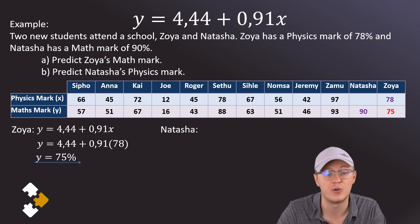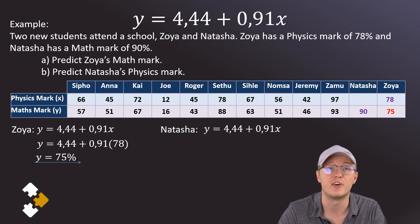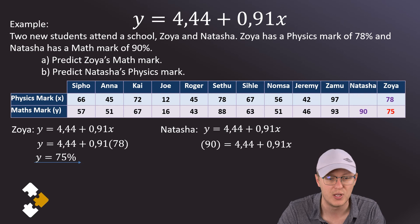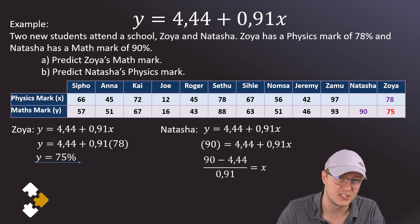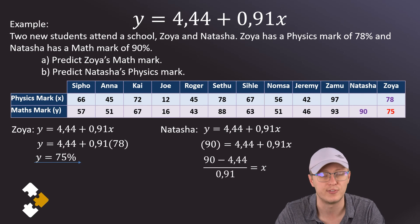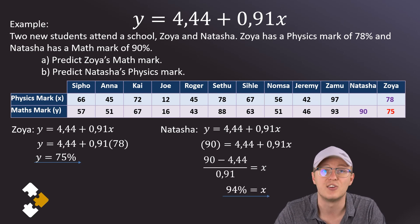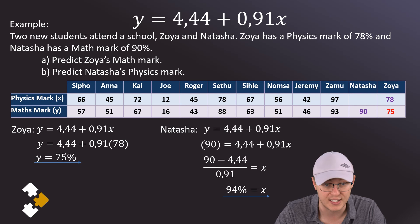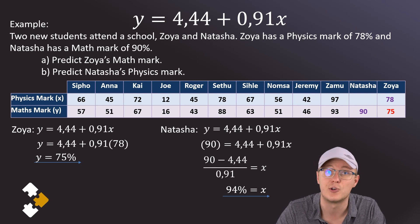For Natasha, we know her maths mark, and that now is going to be the y variable. So in order to find the predicted physics mark, all we have to do is to substitute that 90 in for y because it's the y variable and solve for x. Now the 4.44 has to go to the other side and become subtraction, and then we have to divide both sides by the 0.91 in order to find x. And this then yields an answer of 94%. So we expect that Natasha, who got 90% for math, is probably going to get 94% for physics.